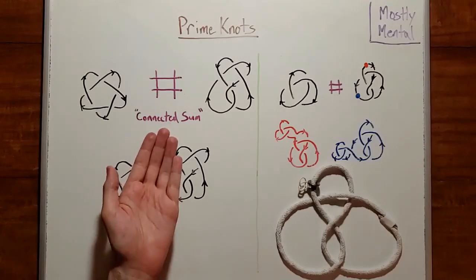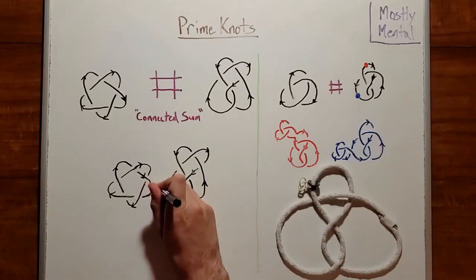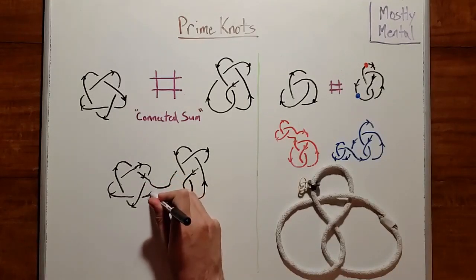We'll define the connected sum of two knots to be what we get when we cut both knots open and stick the loose ends together, matching the directions.